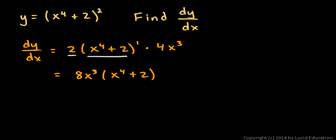It's 2 times the inner function to the power of 1, and then we multiply by the derivative of the inner function. The inner function is x to the fourth plus 2, so the derivative of that is 4x cubed.